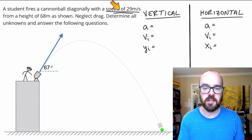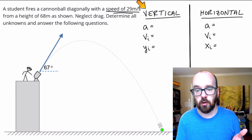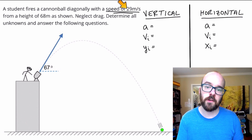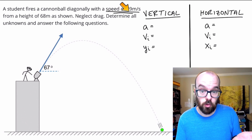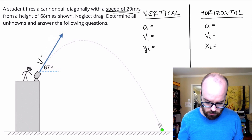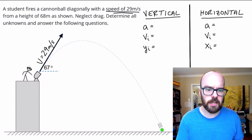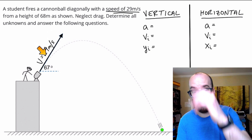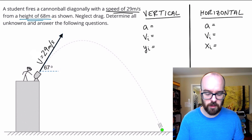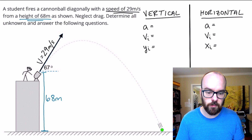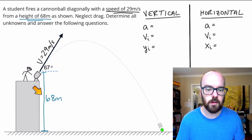So let's read this problem. A student fires a cannonball diagonally with a speed of 29 meters per second. I'm going to color code this — blue for vertical, red for horizontal. The speed of 29 meters per second is underlined in black because it's neither vertical nor horizontal. That's the speed it's moving diagonally at that angle, 29 meters per second. From a height of 68 meters — that's underlined in blue as a vertical distance — I'm going to label that on the diagram as the distance from the ground up to the launch height.